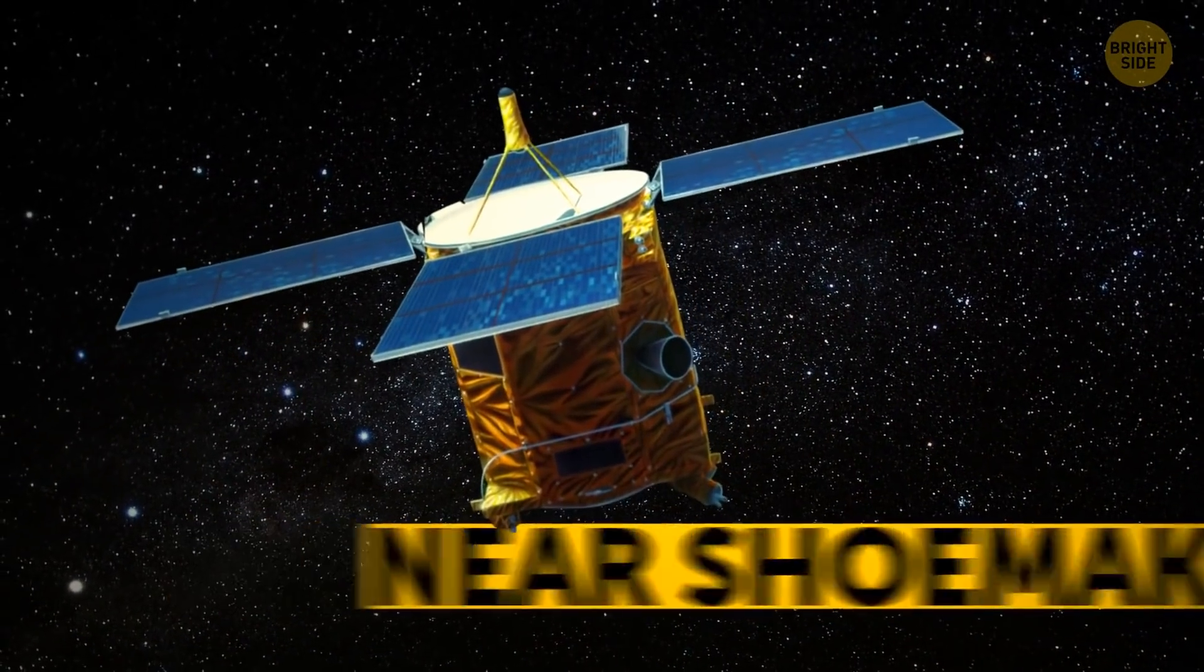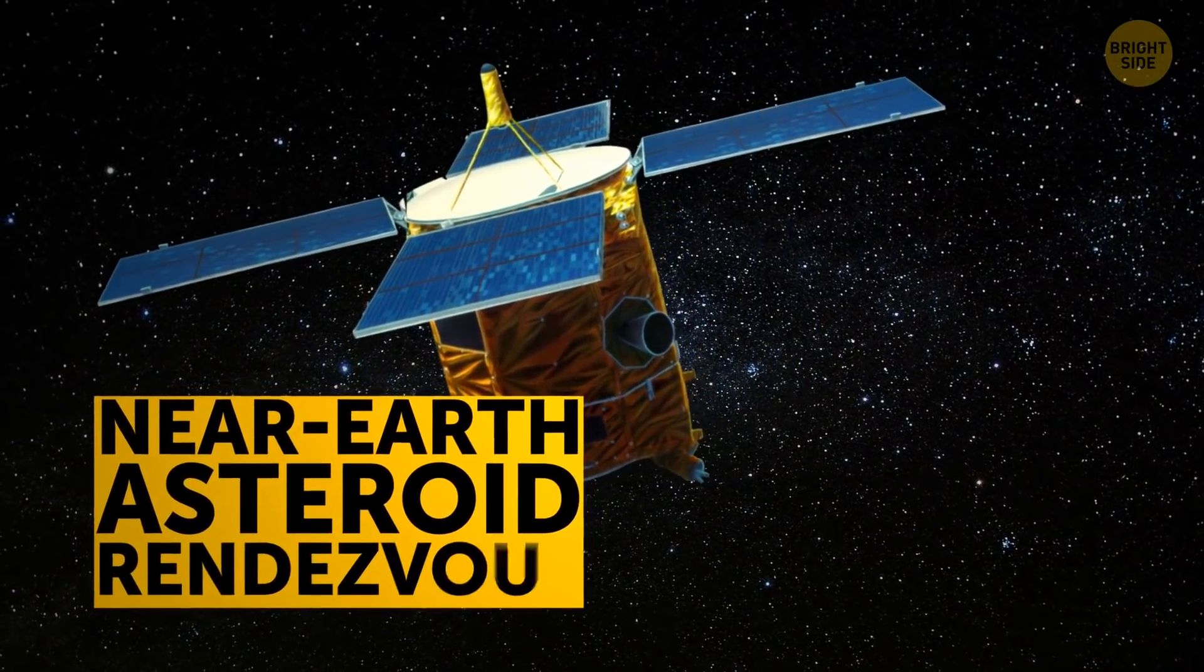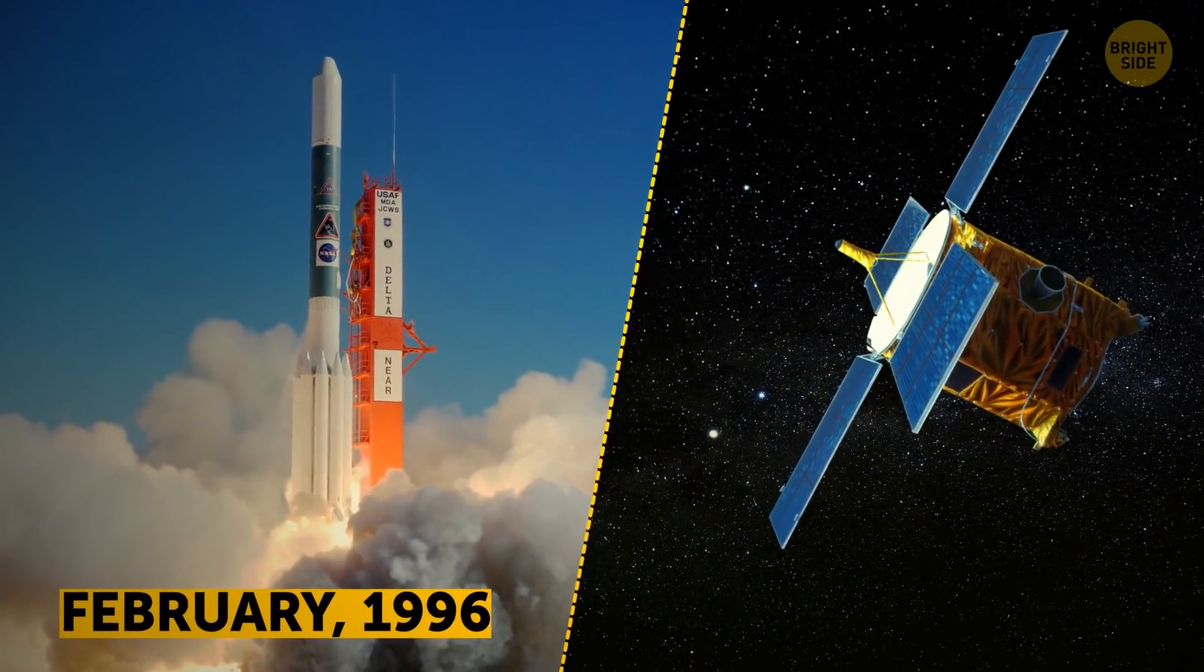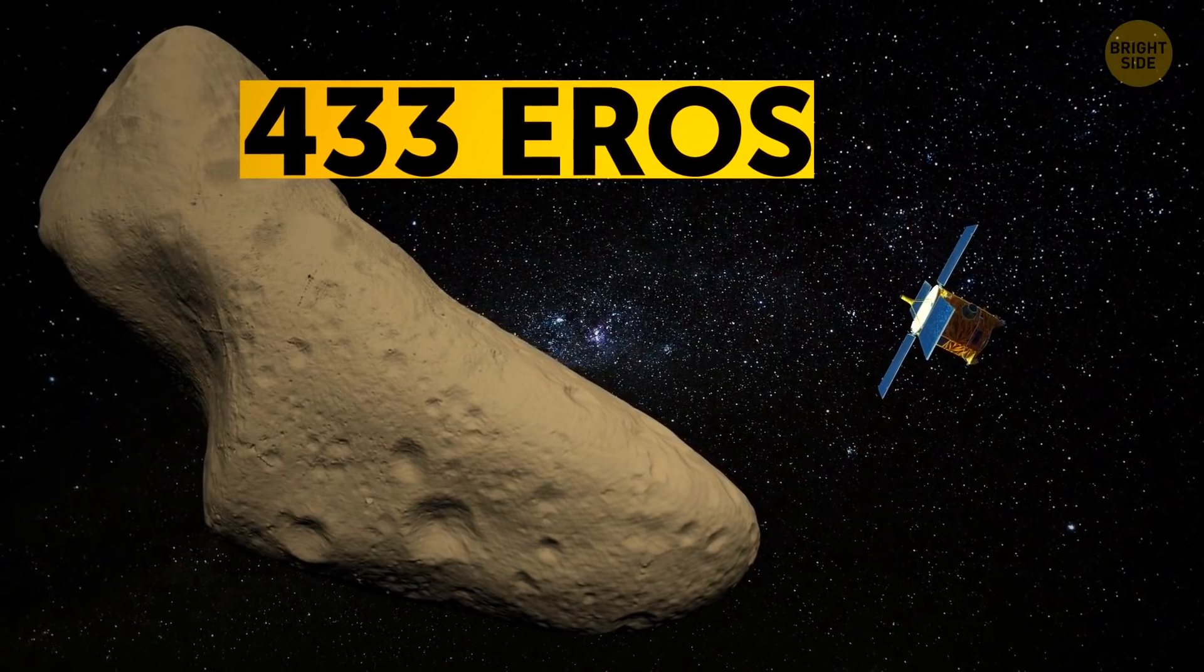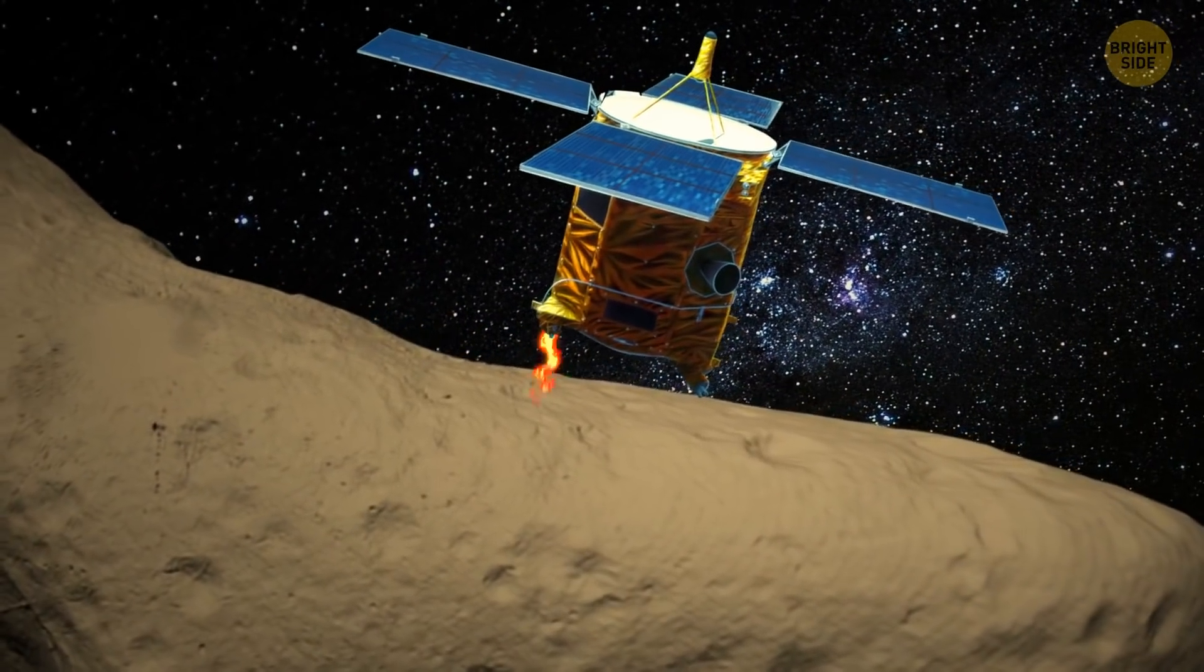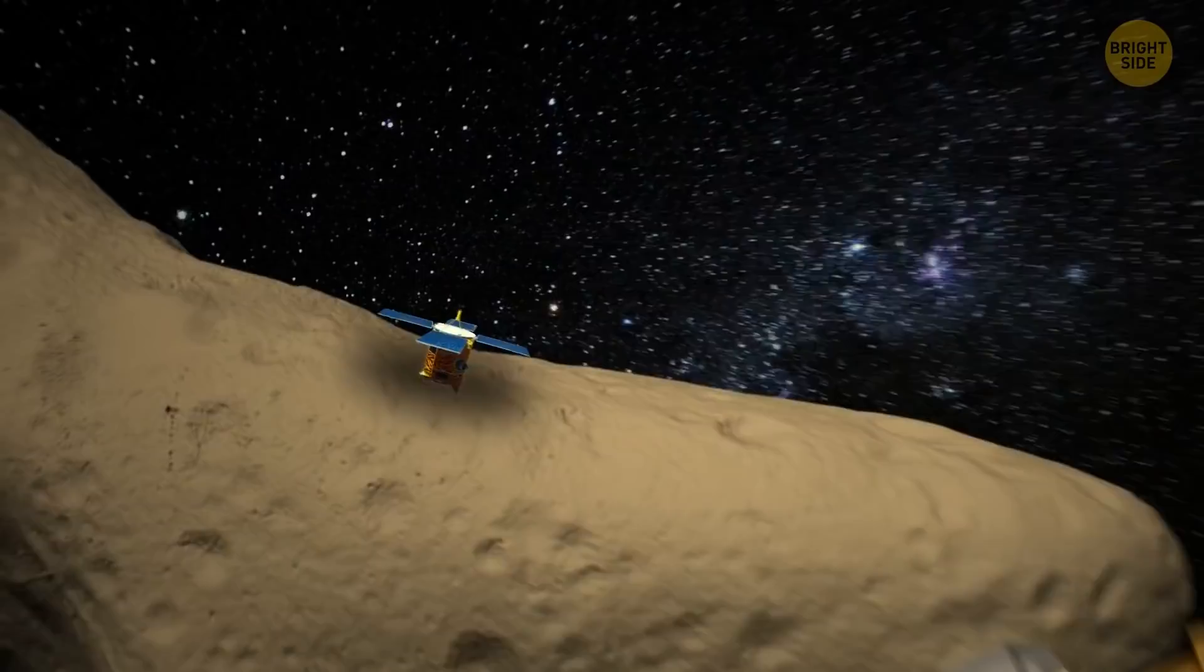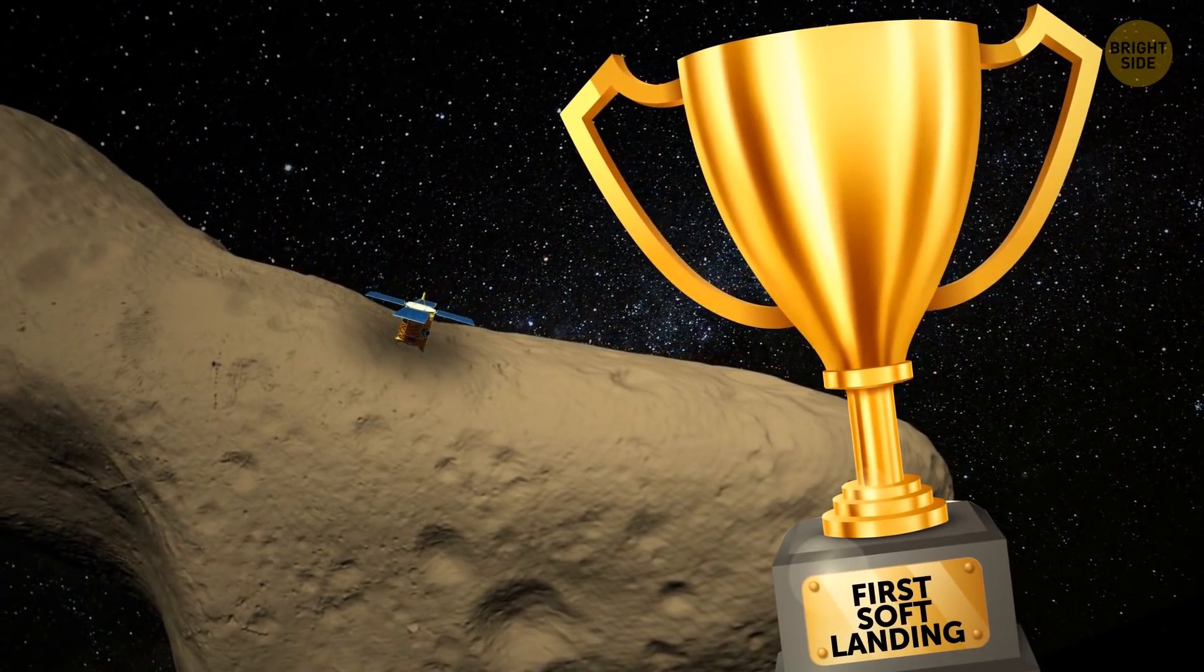NEAR Shoemaker, which stands for Near-Earth Asteroid Rendezvous spacecraft, launched in 1996, finally got a date with asteroid 433 Eros. It wasn't about swiping right, but going around Eros and completing the first soft landing on an asteroid ever.